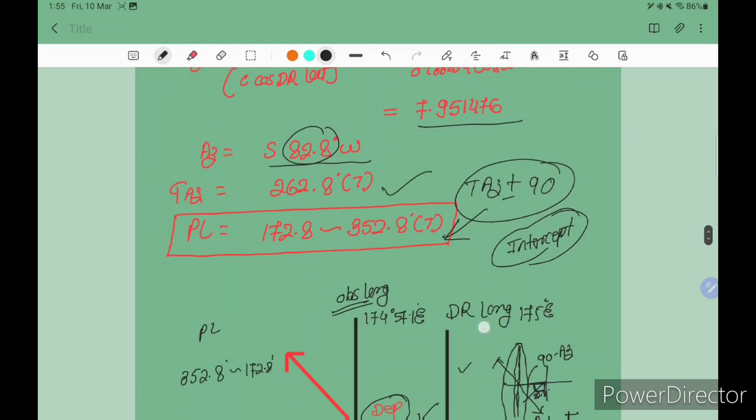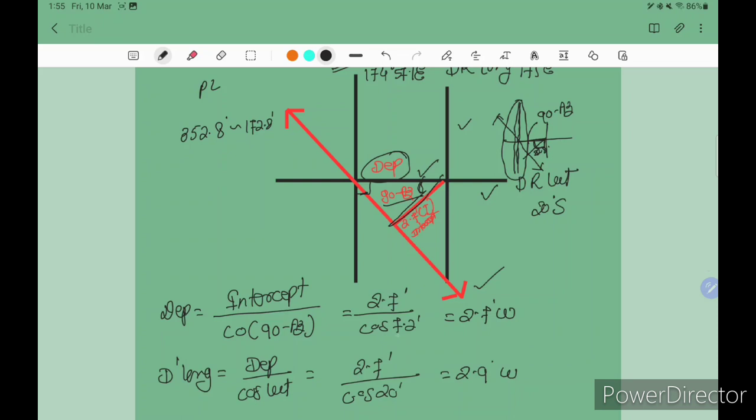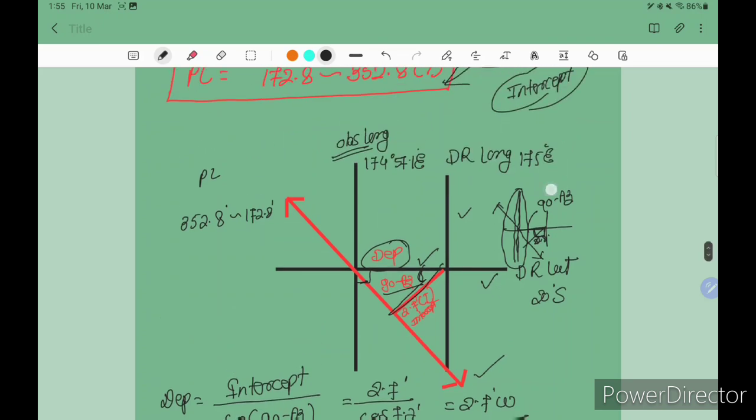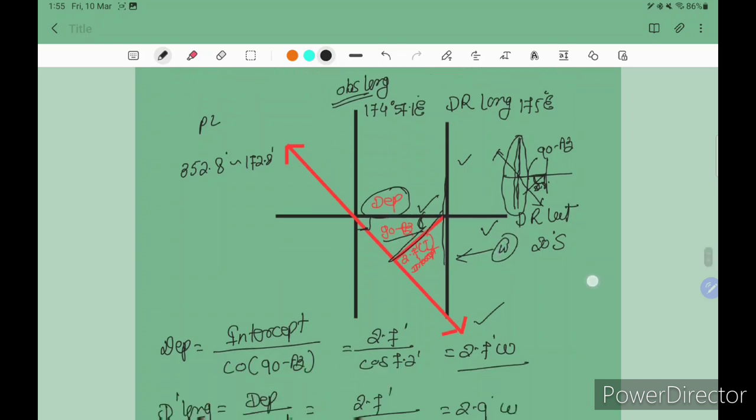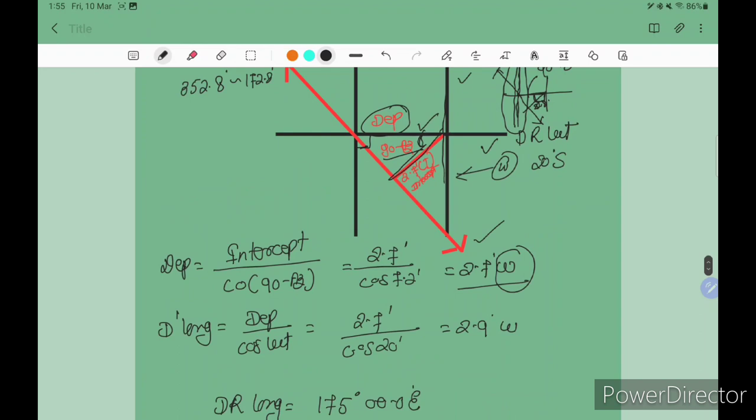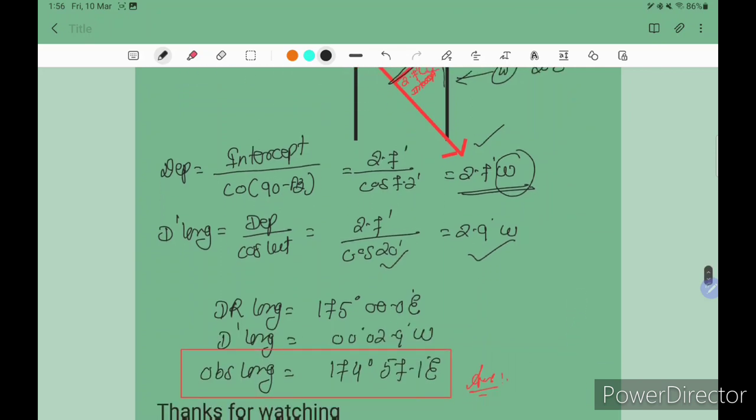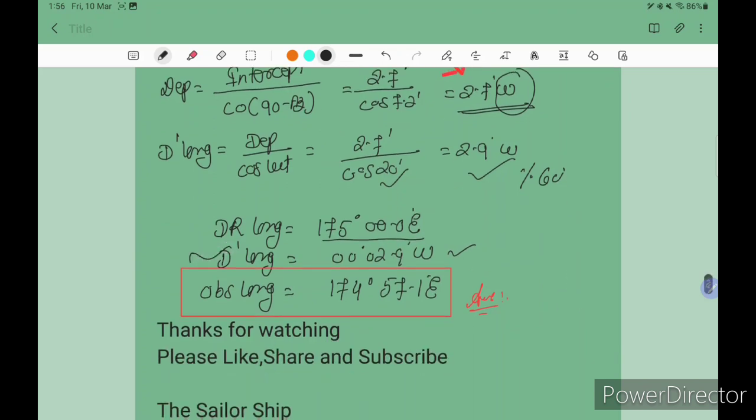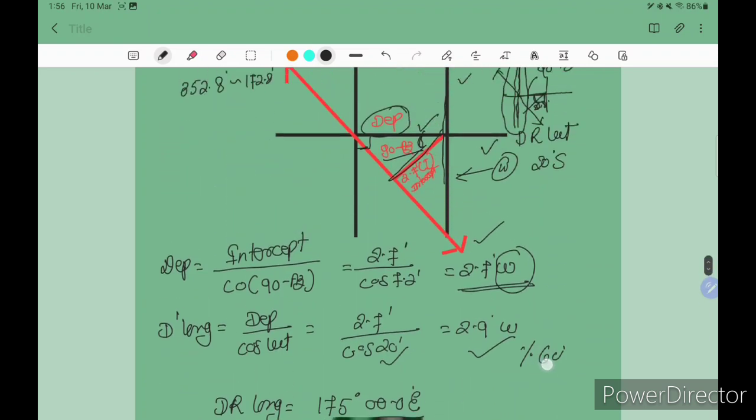This 90 minus azimuth, this is two points: intercept, and we are finding observed longitude. This is our PL. Formula is departure equals intercept divided by cos(90 minus azimuth). So intercept 2.7 divided by cos(90 minus 82.8) equals cos 7.2. After calculating, you get departure 2.7 west. Since your azimuth is east, you're going in the other direction, so the name is west. Now d'long equals departure divided by cos latitude. Put the values: 2.7 divided by cos 20 degrees equals 2.9 minutes west, which is 0.0 degrees 2.9 minutes. Put this in DR longitude, and you get observed longitude 174 degrees 57.1 minutes East.